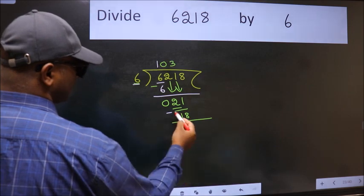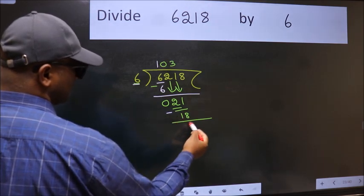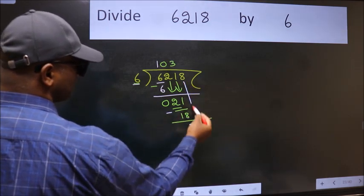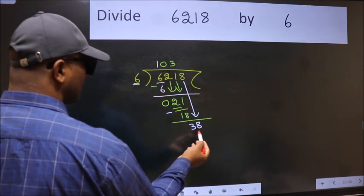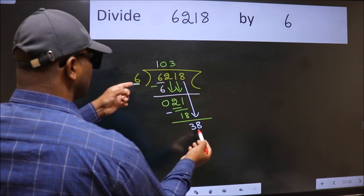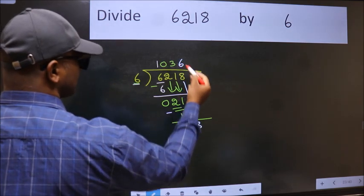Now we subtract. We get 3. After this, bring down the beside number. So 8 down. 38. A number close to 38 in 6 table is 6 times 6, 36.